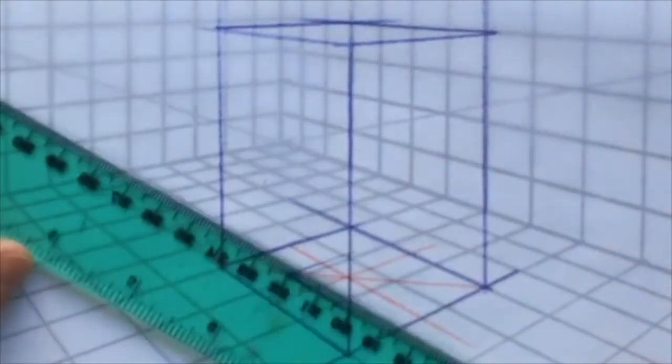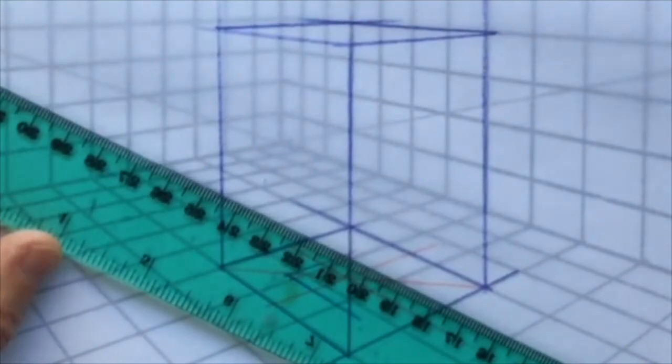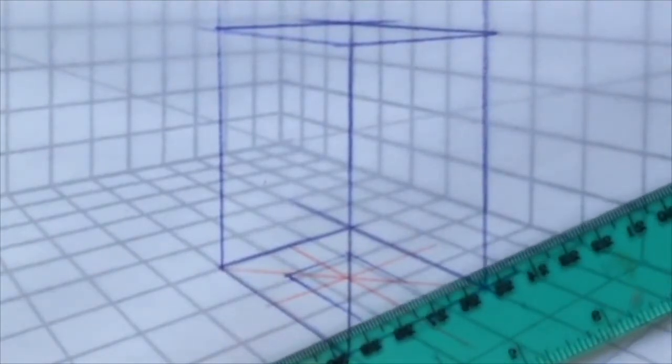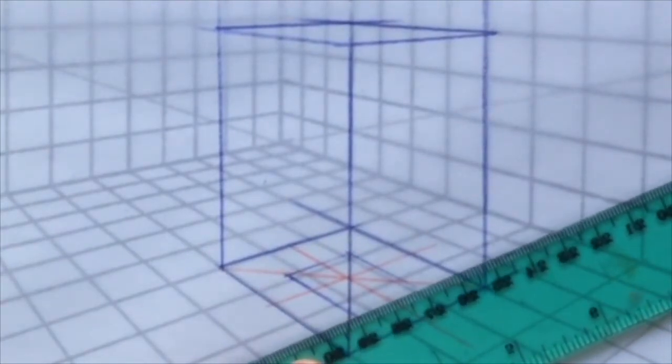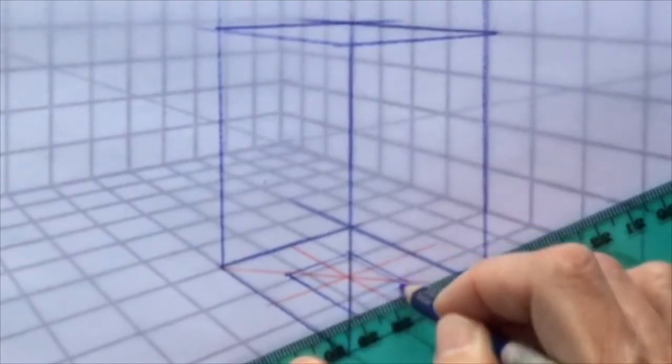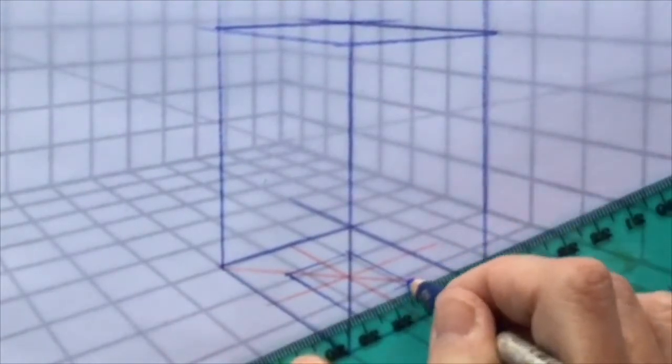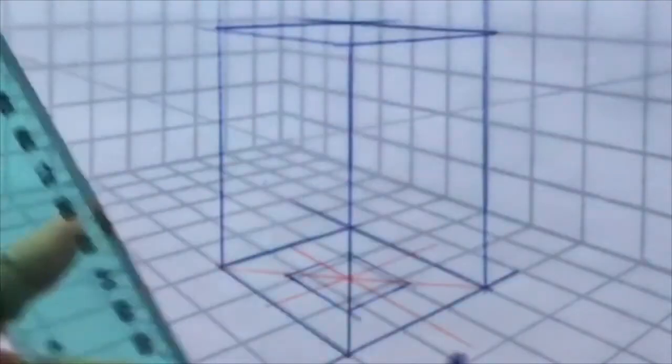These back and front lined up, so that's where I know this one should be, and these two should line up now too. You're always using your vanishing points; you never really stop using your vanishing points. Okay, so there's my first box and it's not very tall.